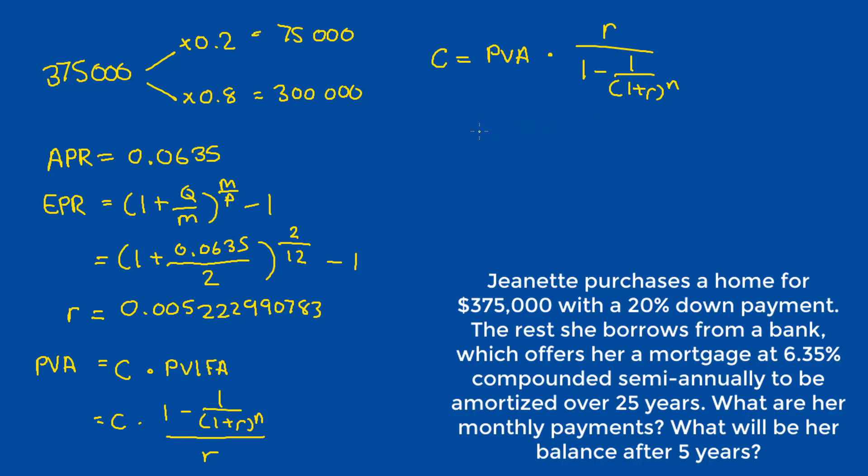And plugging in our values, we get 300,000 times R, which I'm not going to write out again because it's a really long and annoying number, over 1 minus 1 over 1 plus R raised to 300. And we get N by multiplying the number of payments in a year, which is 12, by the number of years. So that would be 12 times 25, which gives us 300. So when we multiply this out, if we've done everything correctly, we should get a total value of $1,982.27 as our monthly payment.